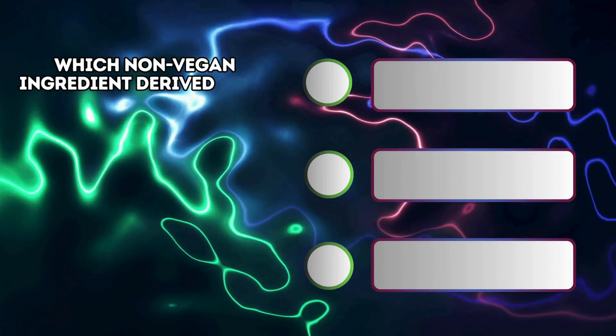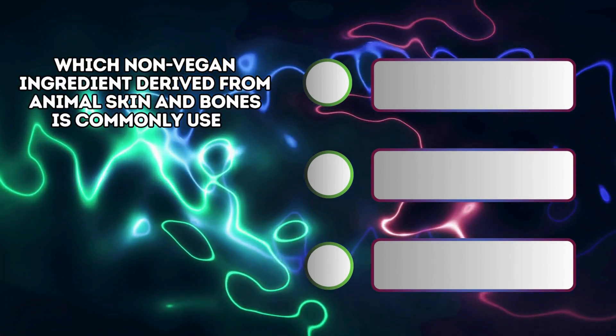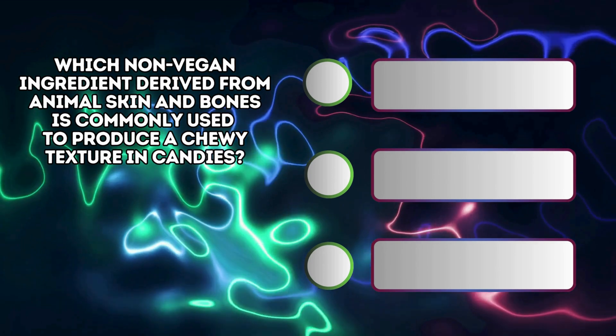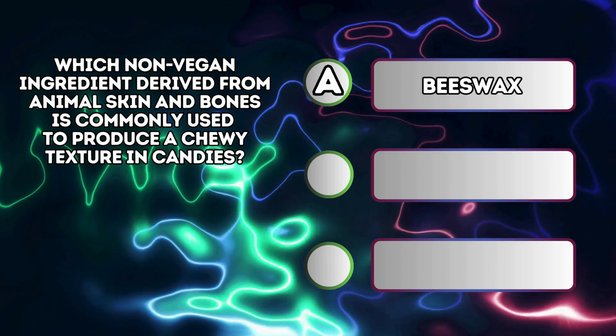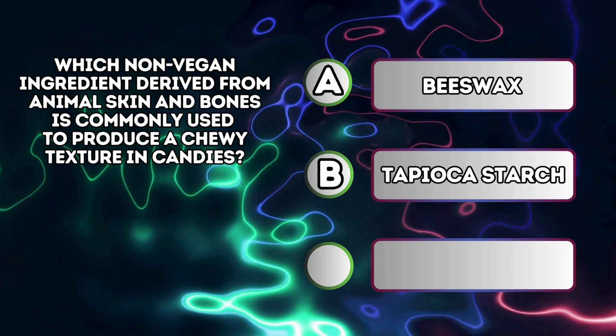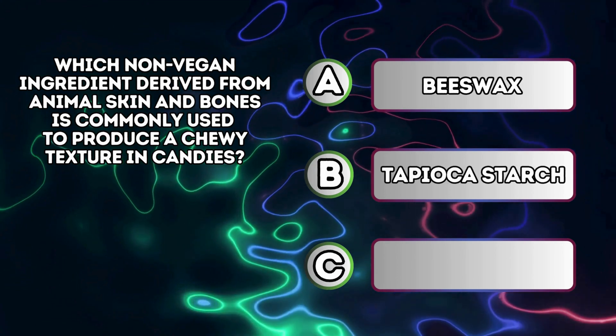Which non-vegan ingredient derived from animal skin and bones is commonly used to produce a chewy texture in candies? A. Beeswax B. Tapioca starch C. Gelatin